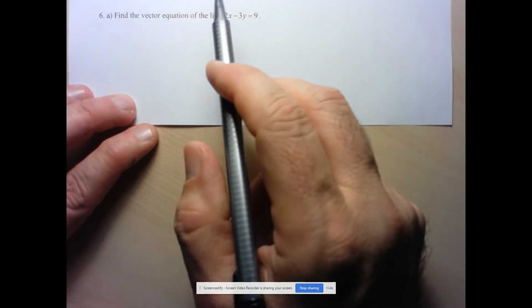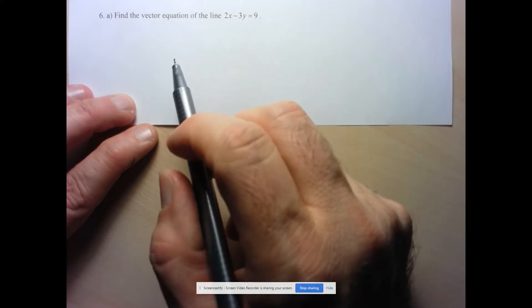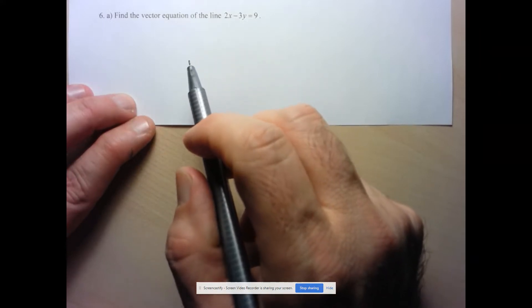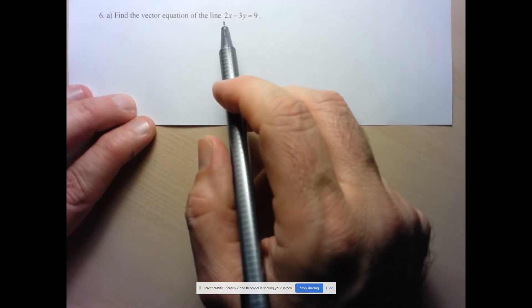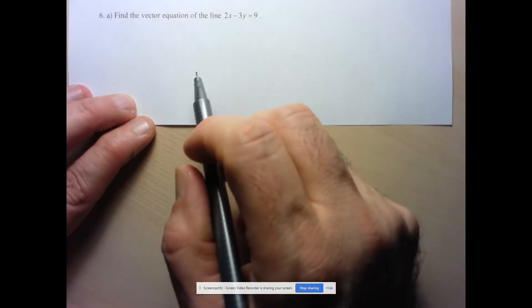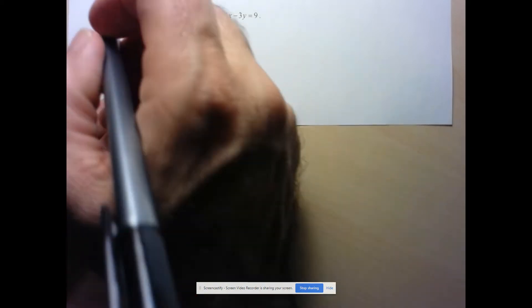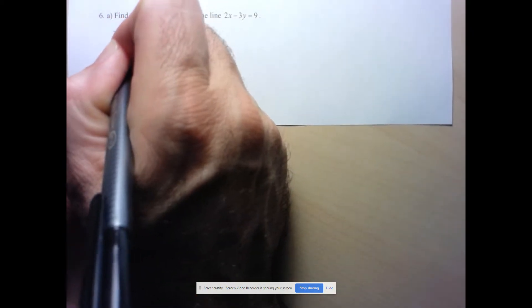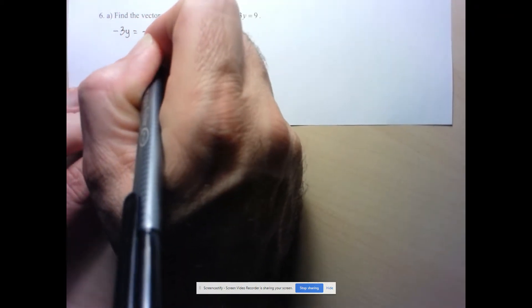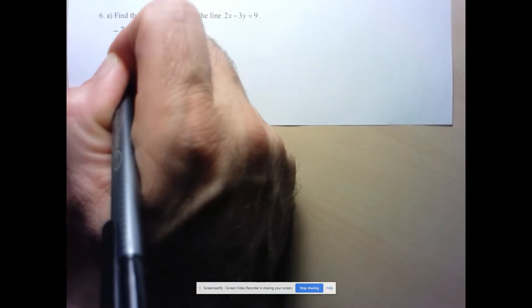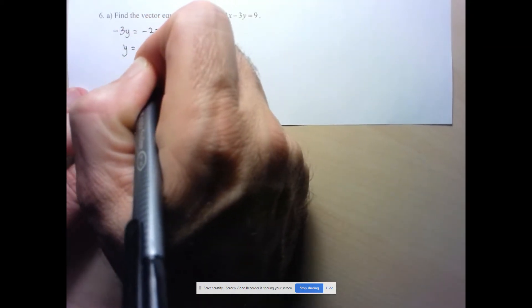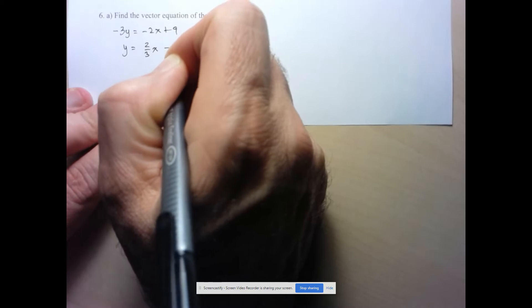Now, most of our talk before, in terms of relating to our previous view of lines, was connecting direction vectors to slope. So I think it might be helpful to first start by putting this in slope intercept form. So here we have negative 3y is equal to negative 2x plus 9, and so y is equal to 2 thirds x minus 3.